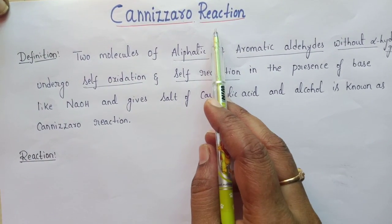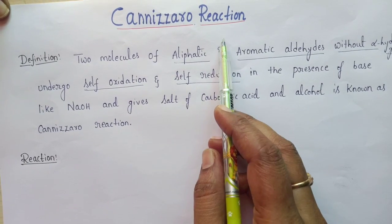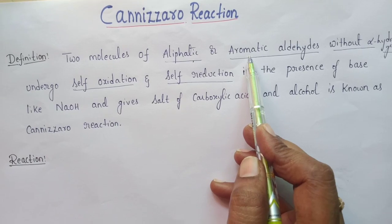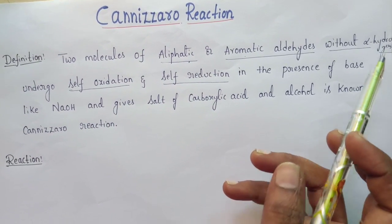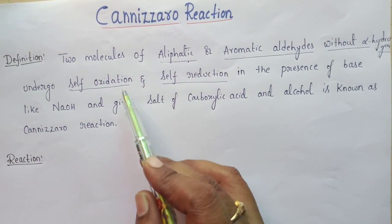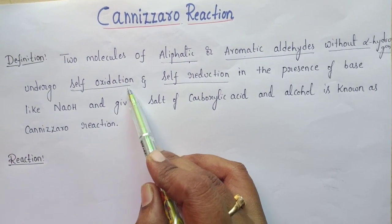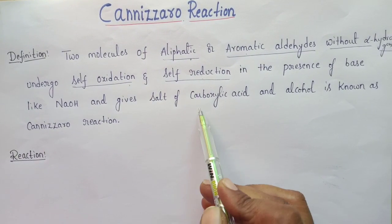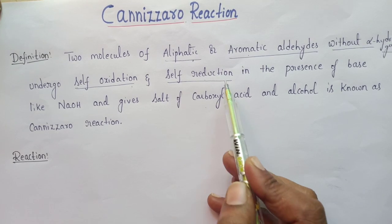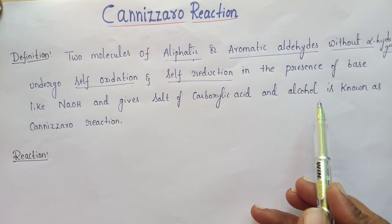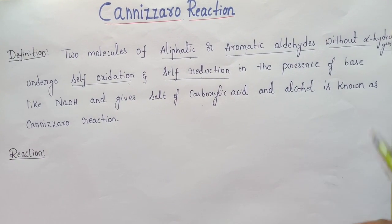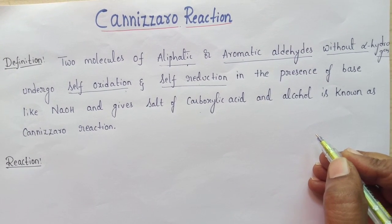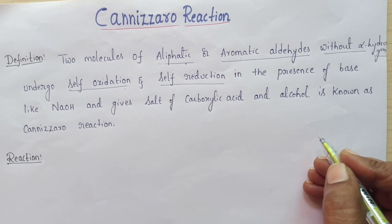It is a type of disproportionation reaction in which two molecules of either aliphatic or aromatic aldehydes without alpha hydrogens react such that one molecule undergoes oxidation and another molecule undergoes reduction. Upon oxidation, it gives a salt of carboxylic acid; upon reduction, it gives an alcohol.